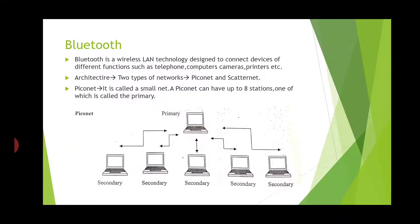Now we will see Bluetooth. Bluetooth is a wireless LAN technology designed to connect devices of different functions, such as telephones, computers, cameras, printers, etc. In Bluetooth, two types of networks are used as architecture: one is the Piconet and the other is the Scatternet. A Piconet is called a small net. A Piconet can have up to eight stations — one is called the primary and the remaining are called secondary stations.